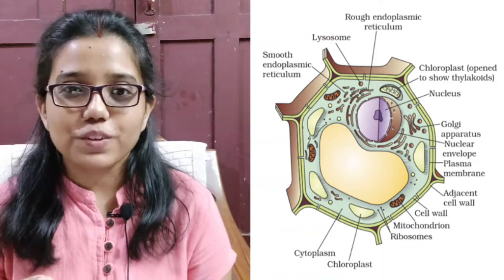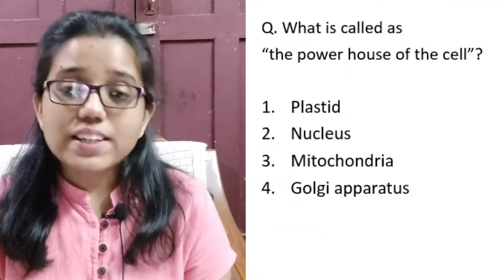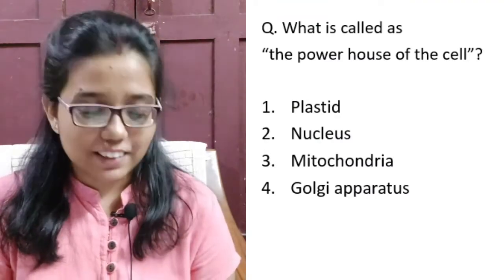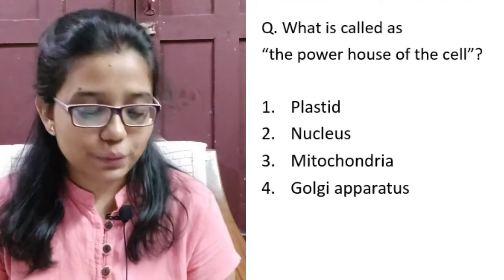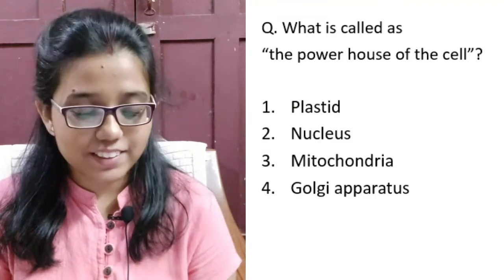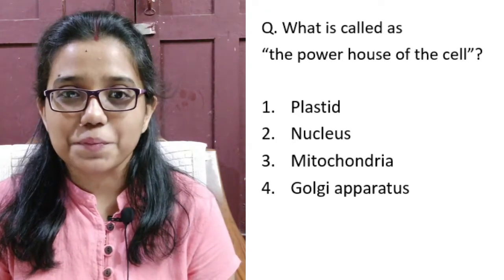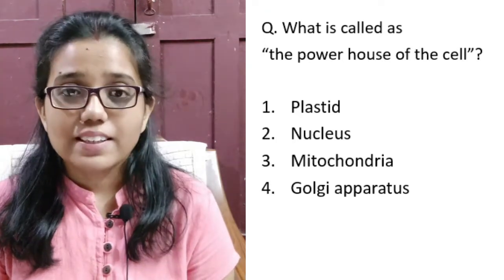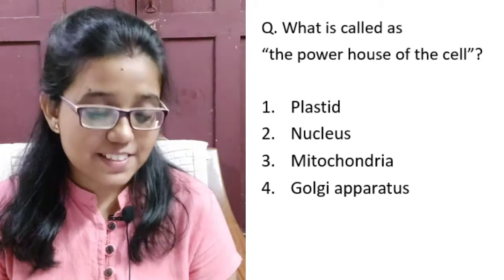Now let's answer a few questions quickly. What is called the powerhouse of the cell? Plastid, Nucleus, Mitochondria, or Golgi apparatus? Time up. Correct answer is C, Mitochondria.